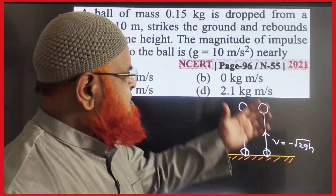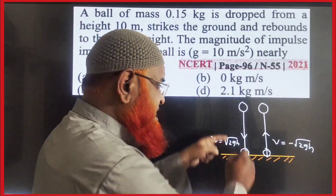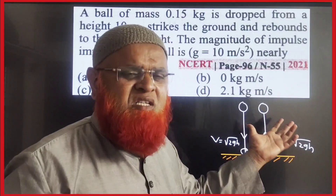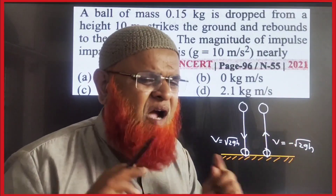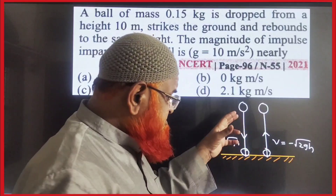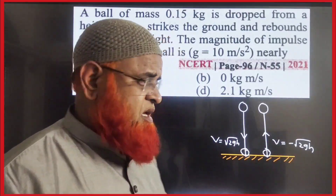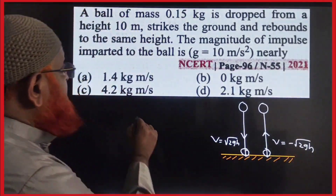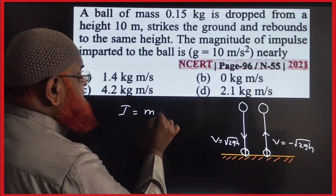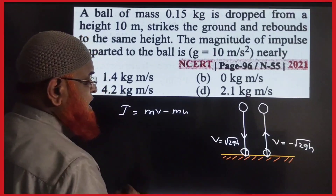In this case you have taken one ball — a ball falls on the ground and rebounds back to the same height. The question is: what is the impulse of the ball on the ground? Impulse is nothing but change in momentum, that is mv minus mu.